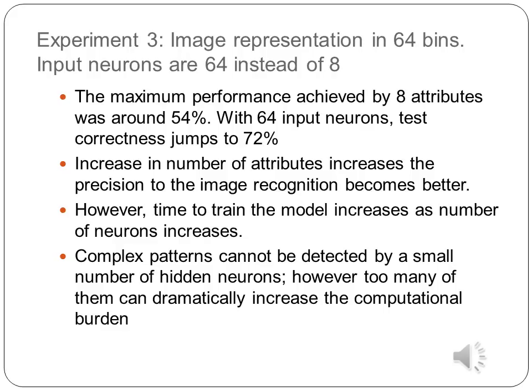In order to have an efficient network model, the number of neurons should not be far more than the optimum number of hidden neurons, as too many hidden neurons can dramatically increase the computational burden.